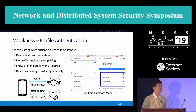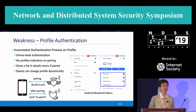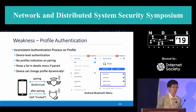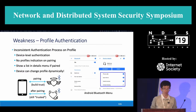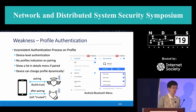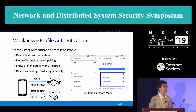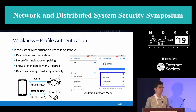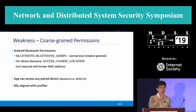Here we go through the weaknesses we identified. The first one is about profile authentication. We found that authentication is quite inconsistent, especially for profiles. The authentication itself is device-level authentication, so there is no profile indication during the pairing process. Only some function names are provided after pairing. Before pairing, the device can pretend to be legitimate, and then after pairing, the device could turn evil. But since the pairing is already finished, the phone will still trust the device.